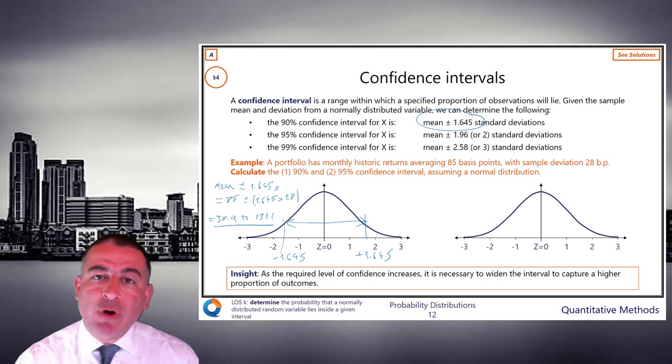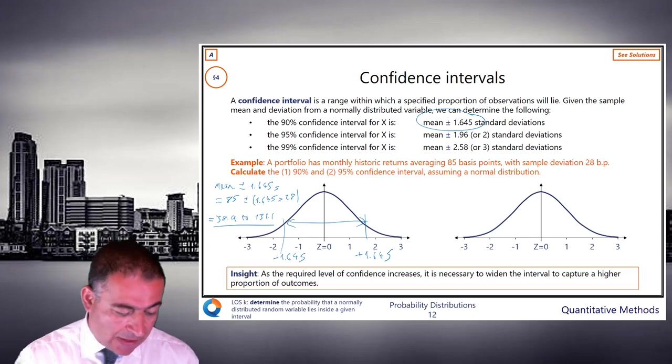In basis points, that range captures 90% of the population. Therefore, we're 90% confident that that range is a random month, for example, will have historic returns in that interval. And that's how this works.